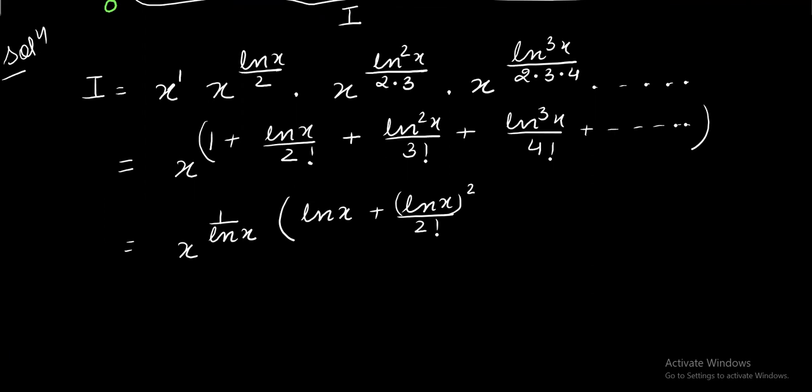Like now I have ln square x upon 2 factorial. I need ln cube x upon 3 factorial which I have created. Then I again have ln power 4 x upon 4 factorial and so on to infinity. What we can do here is x power, I will be using the property of the log base and number I am going to interchange. So it is going to become log e to the base x.